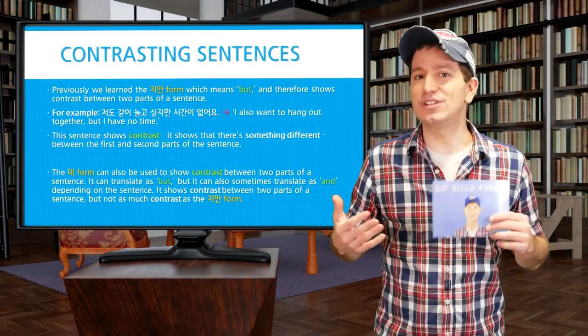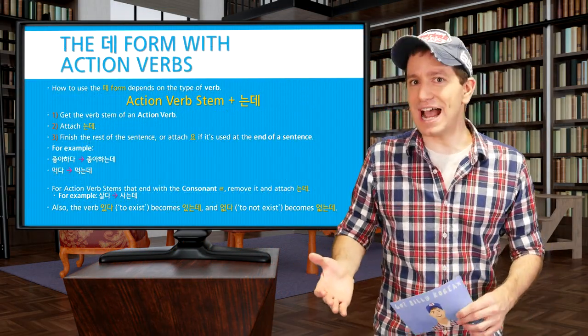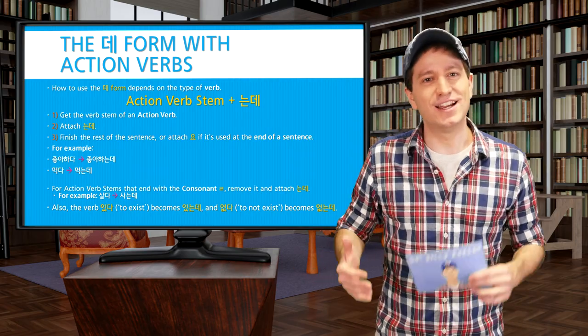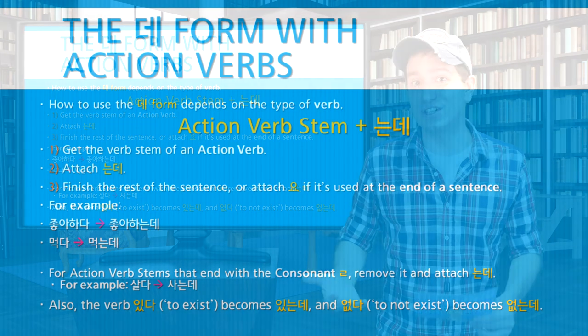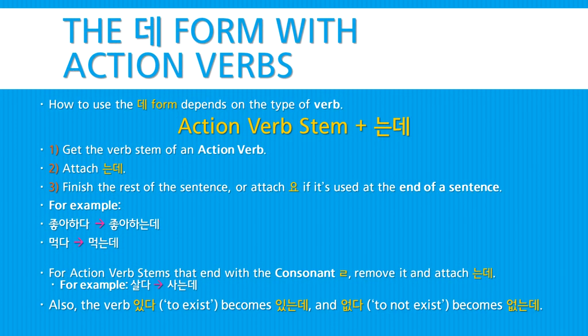Let's learn how to use this new 데 form. The way you conjugate it depends on the type of verb. For action verbs, first get the verb stem and then attach 는데, then finish the rest of the sentence — or attach 요 if used at the end. For example, 좋아하다 becomes 좋아하는데, and 먹다 becomes 먹는데. Action verb stems ending in the consonant ㄹ will drop it and then attach 는데, so 살다 becomes 사는데.